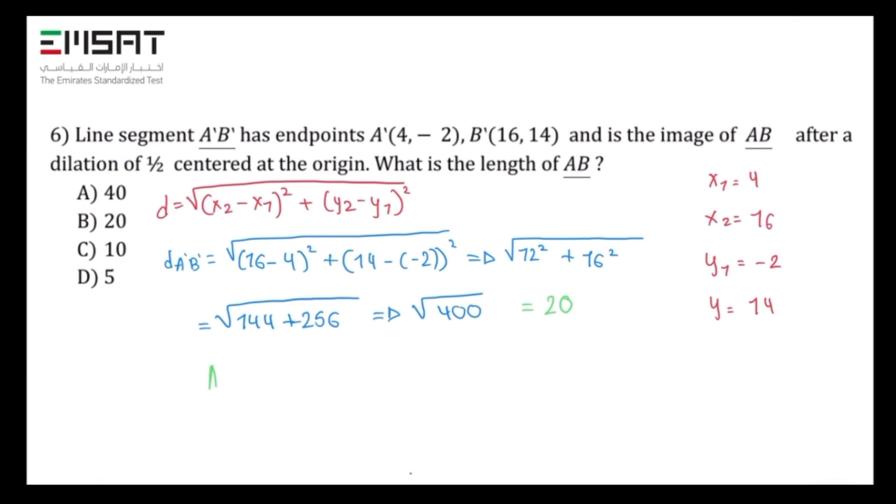AB equals 2 multiplied by 20 which is 40. Therefore, the correct answer is A.